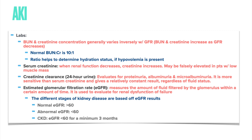The estimated GFR measures the amount of fluid filtered by the glomerulus over time and is used to evaluate for renal dysfunction or failure. Normal GFR is greater than 60; abnormal is less than 60; and chronic kidney disease is defined as GFR less than 60 for a minimum of three months. Note that in the AANP exam, labs are provided, but this is not the case for AANC.